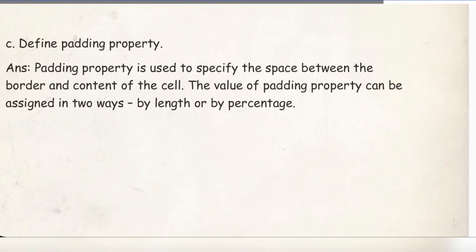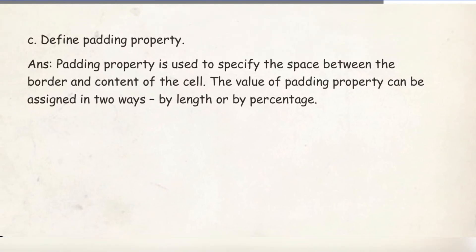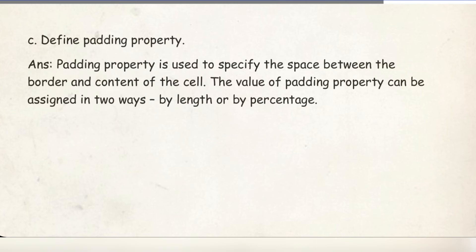Number C: Define the padding property. A padding property is used to specify the space between the border and the content of the cell. The value of the padding property can be assigned in two ways: by length or by percentage. If assigned by length, two options are available: by points (pt) or by pixels (px).